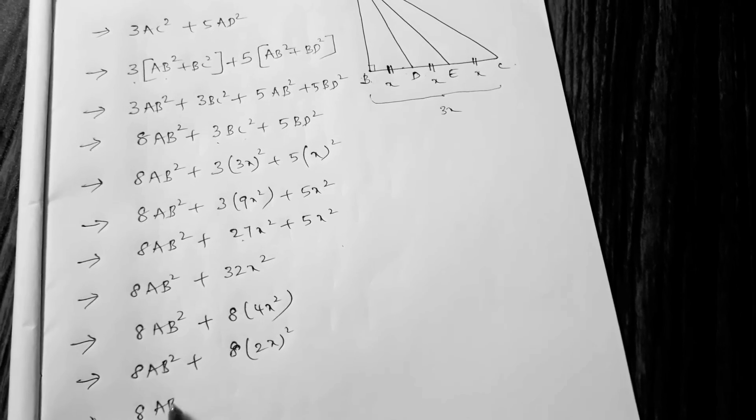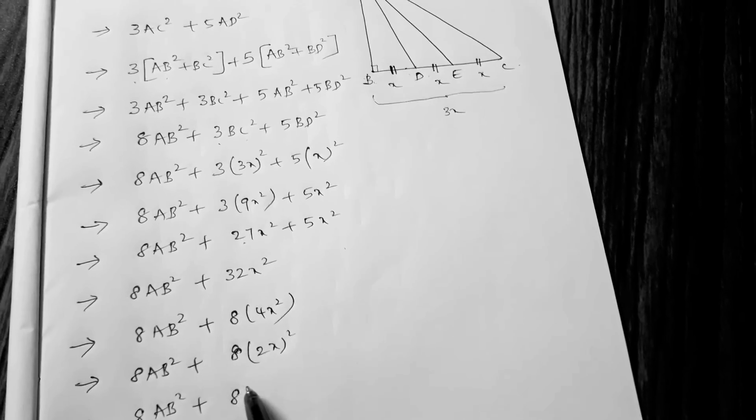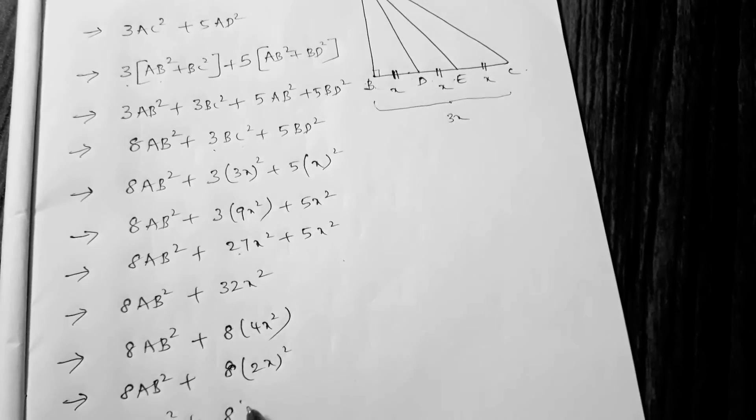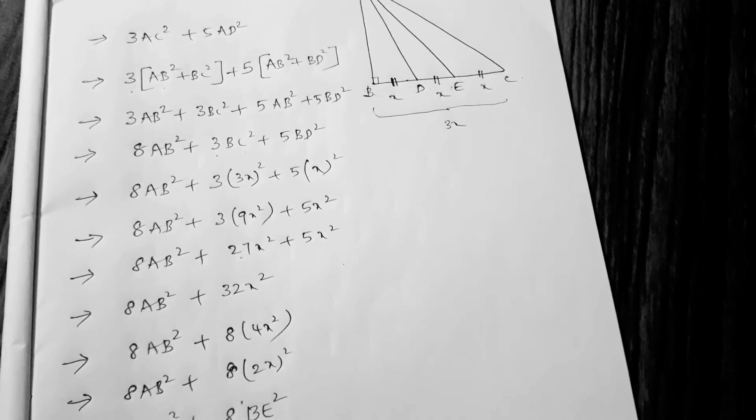So here, 8AB² plus 8 times 2X is nothing but BE. 2X is BE².